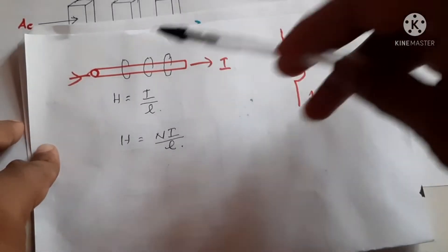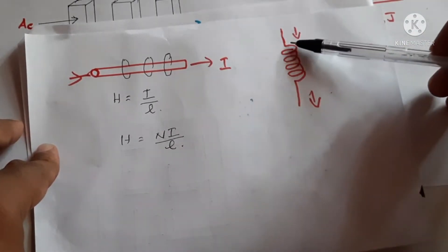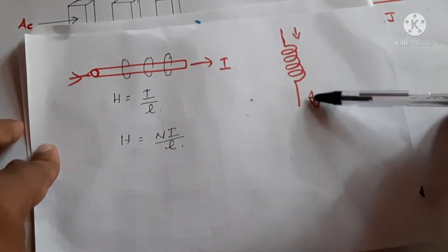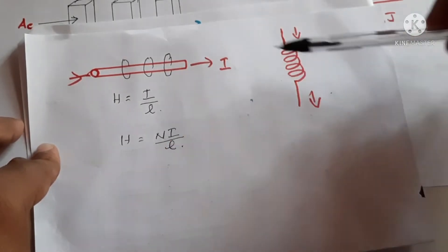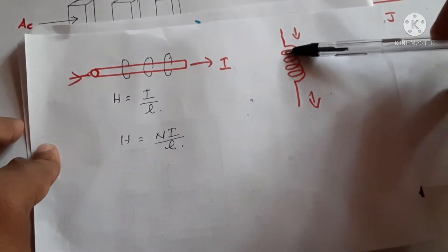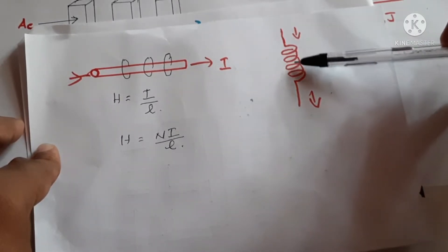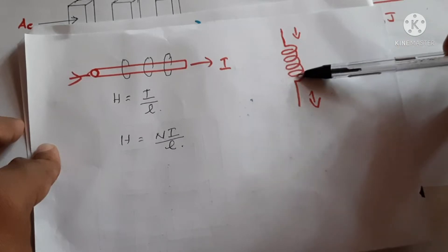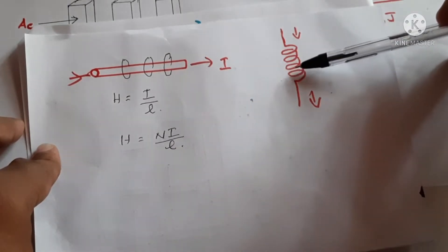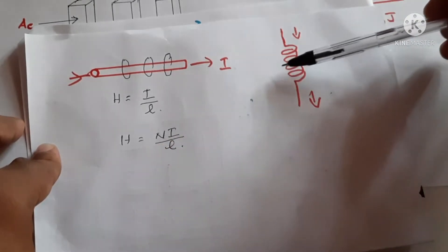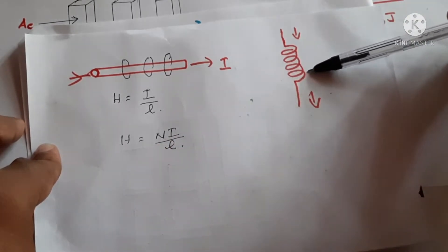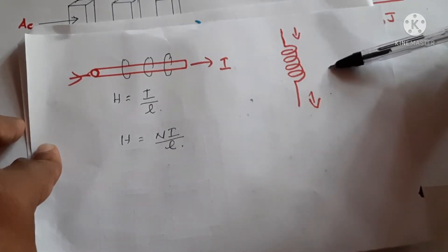Now if we wind the wire into a coil and the same current passes through it, the magnetic field increases. Why? Because each turn produces a magnetic field, so the total magnetic field will be the number of turns multiplied by that current — here four turns, so four times the current. If you take a point near the coil, the magnetic field strength will be very high; if very far, it will be very less.